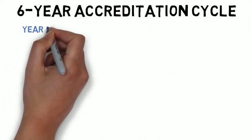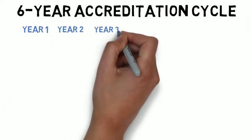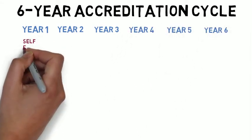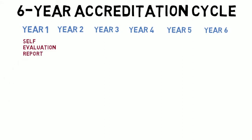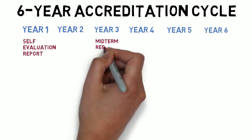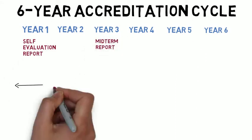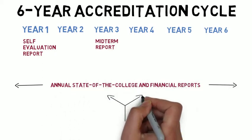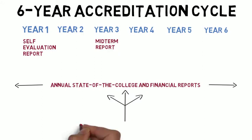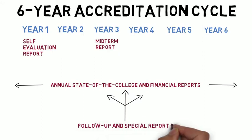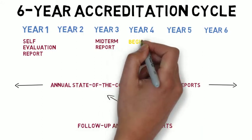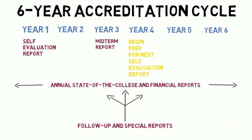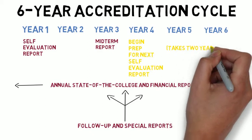A full ACCJC accreditation cycle is six years. During this time frame, a college submits a variety of reports, including a self-evaluation report at the start of the cycle, a midterm report in the third year, and annual state of the college and financial reports. The ACCJC may also request follow-up and special reports. During the fourth year of the cycle, the college begins preparation for an upcoming self-evaluation report.